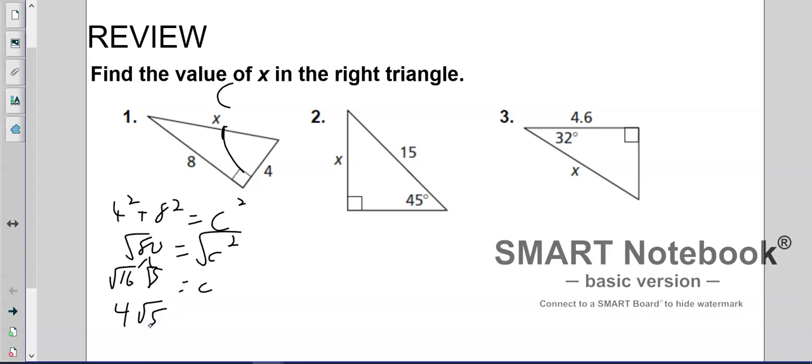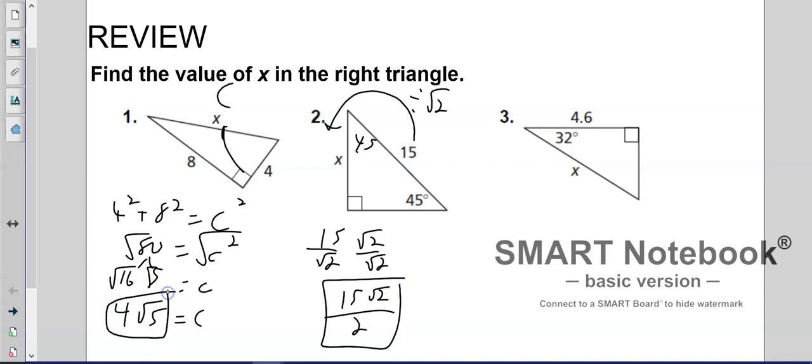On number two we have a 45-45-90. Remember we're going from the hypotenuse, the biggest side, to a smaller leg, so we're going to divide by the magic radical 2. That's going to be 15 divided by radical 2. We can't have a radical on the bottom, so we need to rationalize it. On the top that's going to give us 15 radical 2, on the bottom that's going to give us just 2. Since 15 is not even, we can't simplify it. So that's our answer: 15 radical 2 over 2.